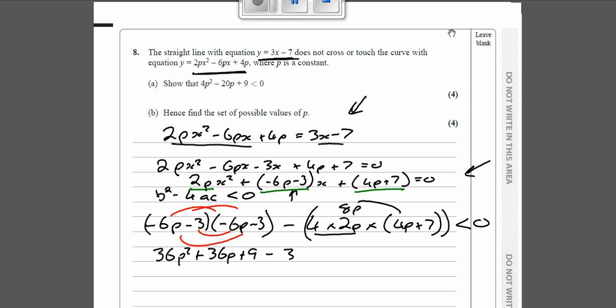And then 4 times 2p is 8p, so if you multiply 8p by 4p that's going to be minus 32p², and then you've got 8p times 7 which is 56p, but then you've got to have minus 56p, and that is less than 0.